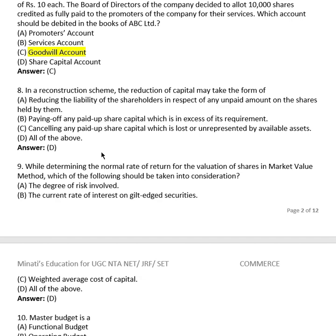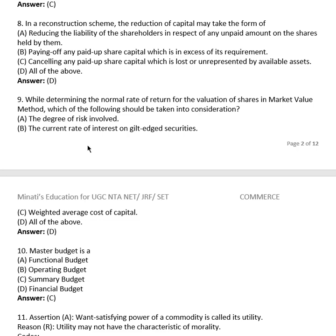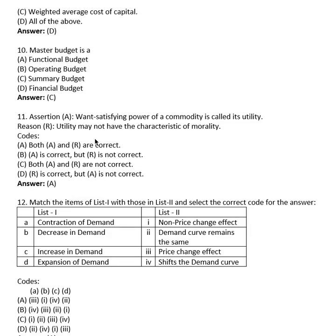If you know the answer, good; if not, write it down or take a screenshot. Question 8: While determining the normal rate of return for valuation of shares using the market value method, which of the following should be taken into consideration? Options: (A) degree of risk involved, (B) current rate of interest on gilted — i.e., government — securities, (C) weighted average cost of capital, (D) all of the above. The answer is (D), all of the above.